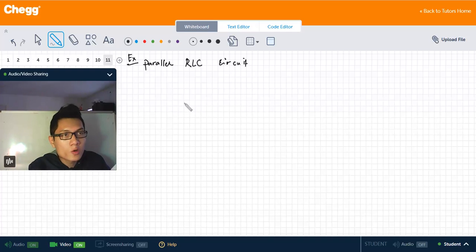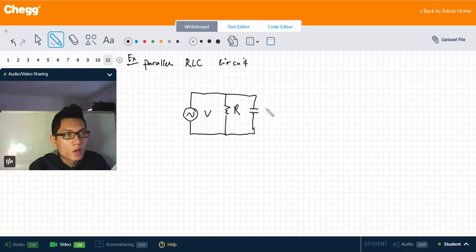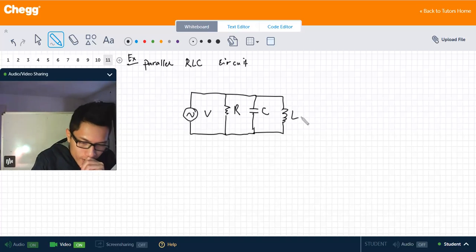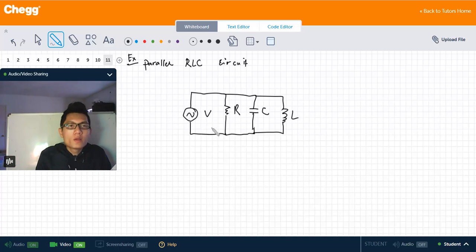So first we have a voltage source V connecting in parallel with the resistor R, also connecting in parallel with capacitor C and inductor L.